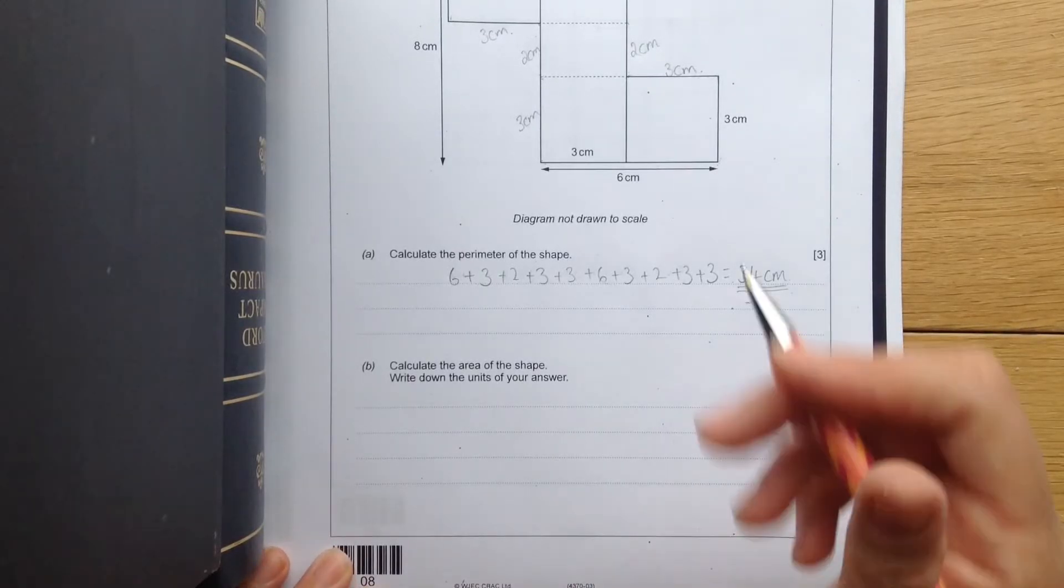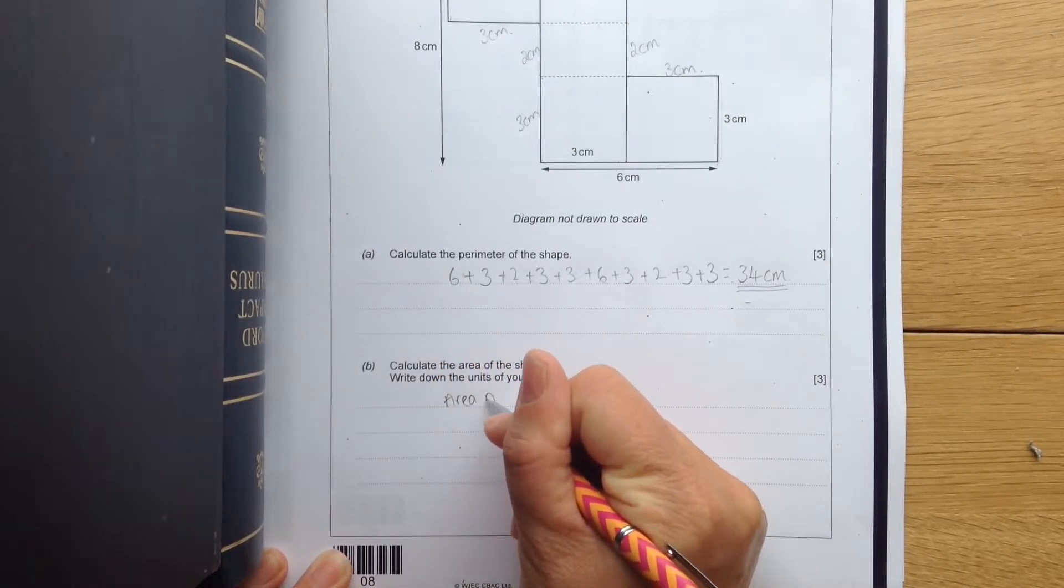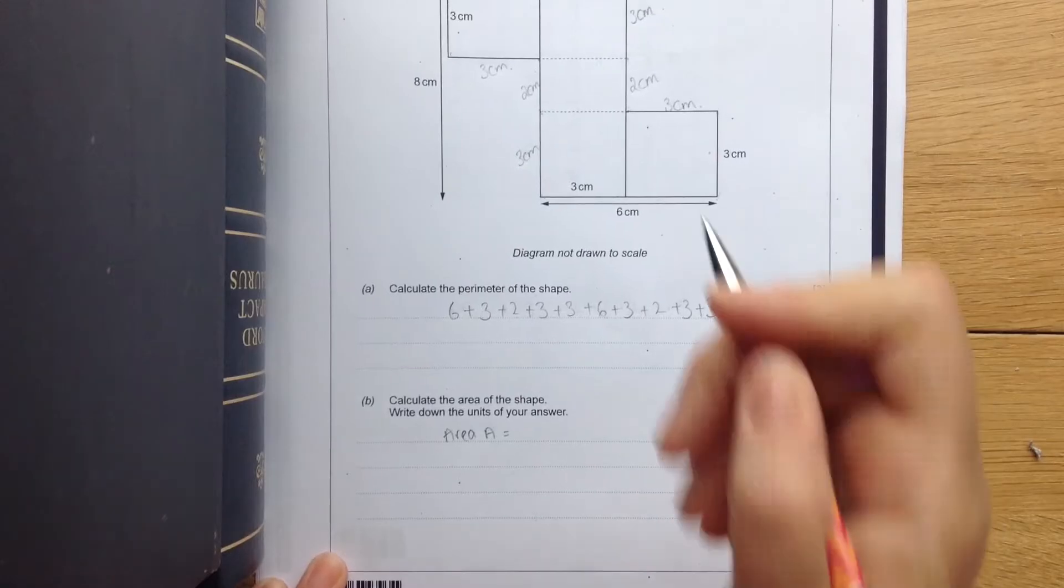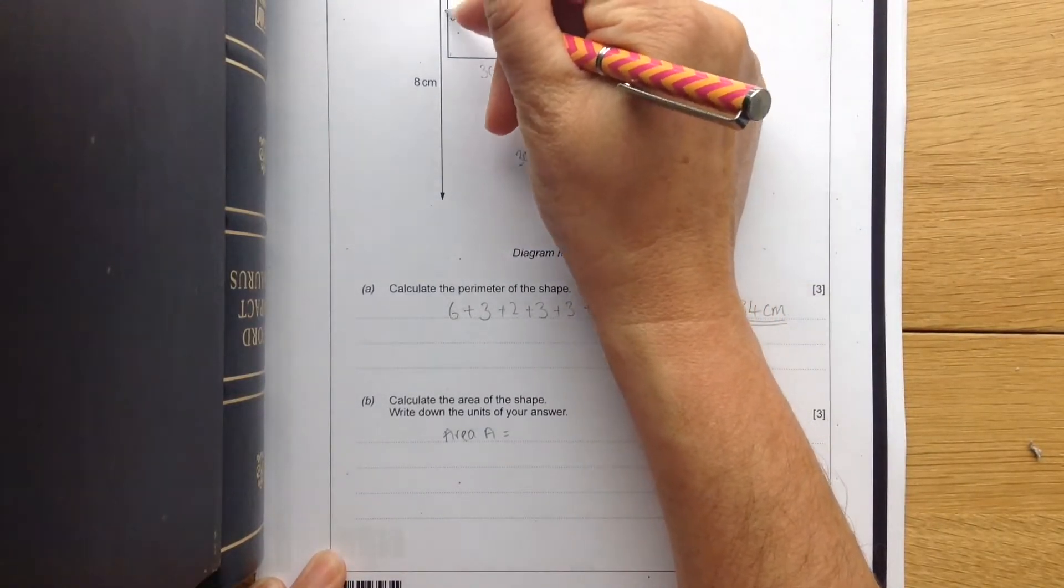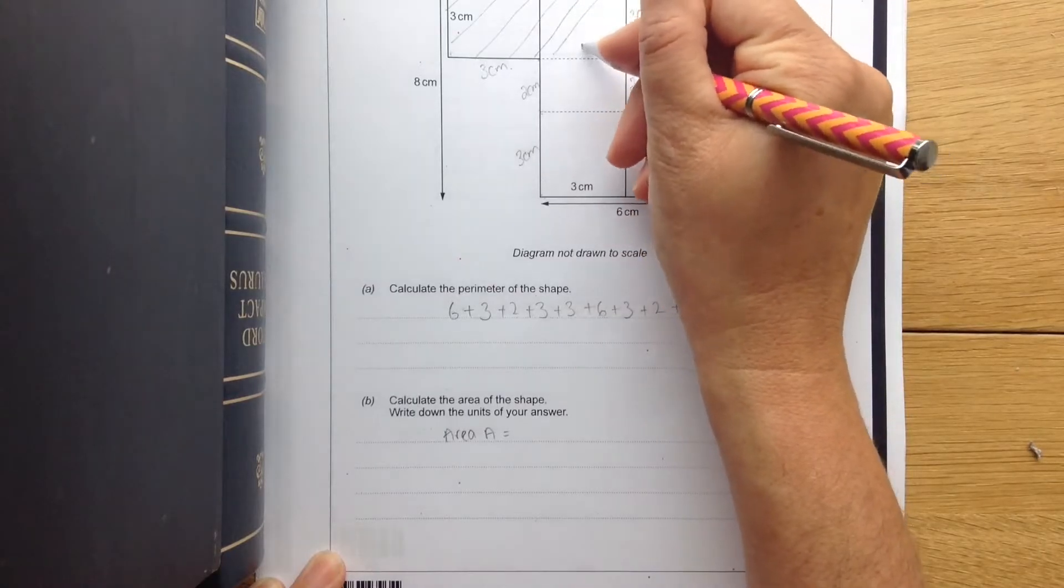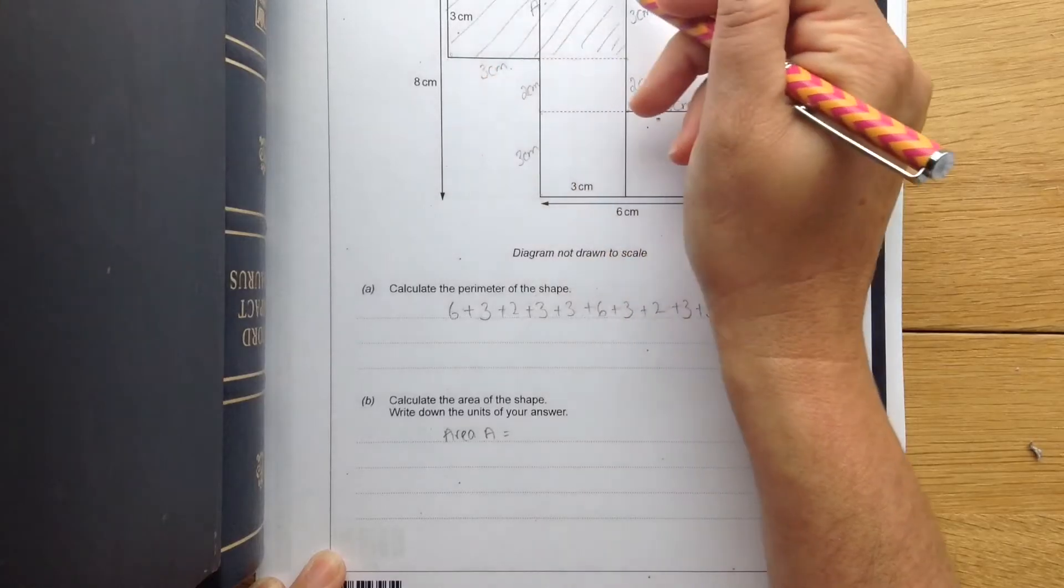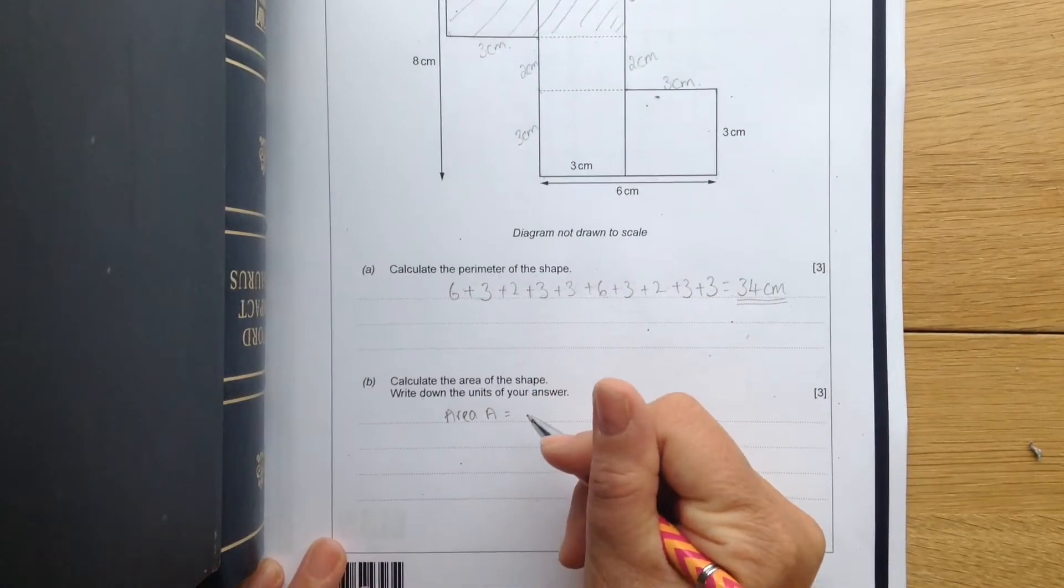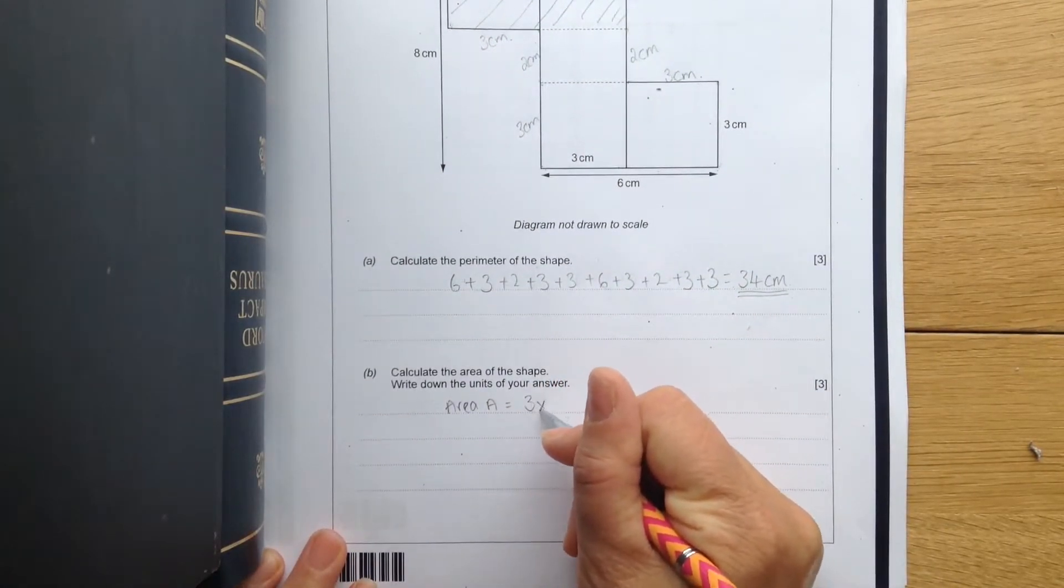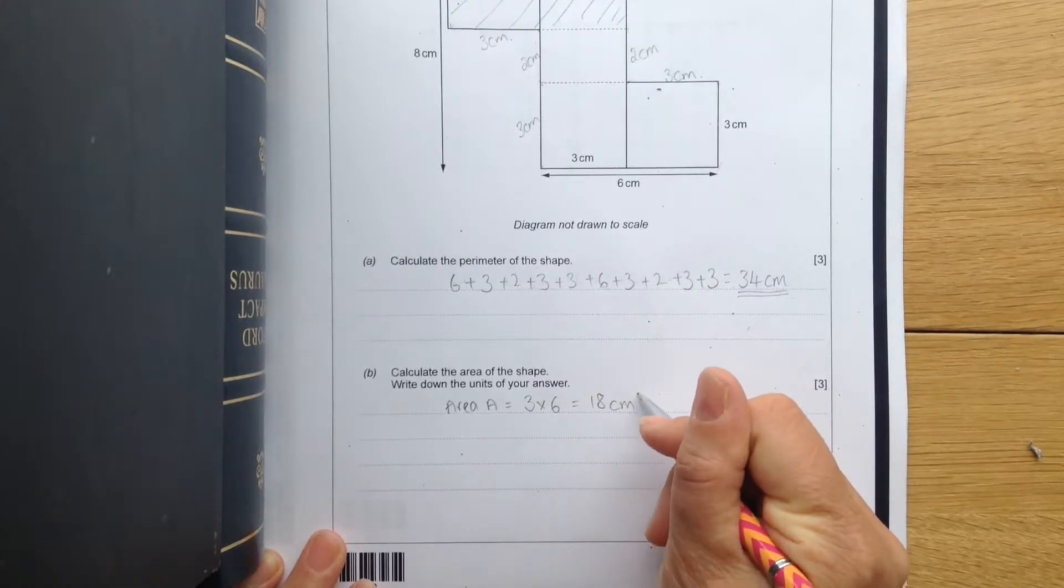I'm going to split it up into three shapes. So first of all, I'm going to work out area A. And area A is going to be this rectangle. And I'm going to shade it so that I know I've already worked it out. So there's area A. And that's going to be 3 times 6, which is 18 centimeters squared.